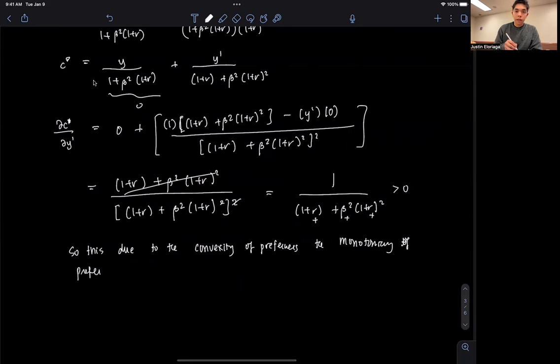So again, the goal of the agent is to smooth consumption out through time, and of course, if they expect that their future income will increase, they will consume more as well in the present, depending on the value of beta by how much, but it will be a positive amount, because that smooths consumption more and more into the future.